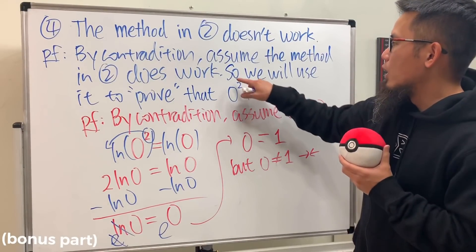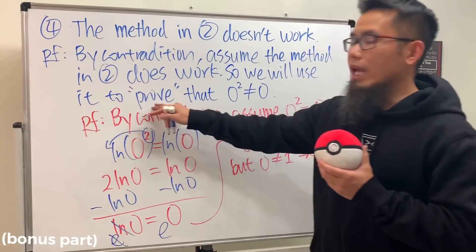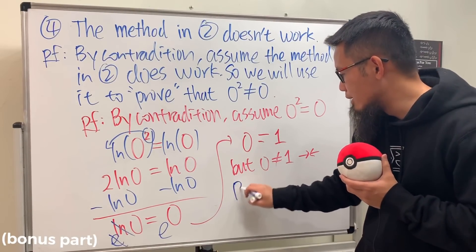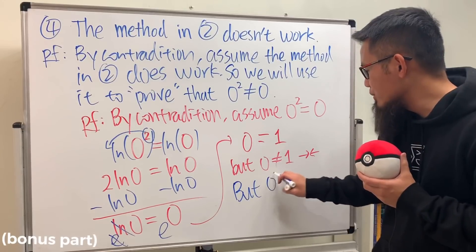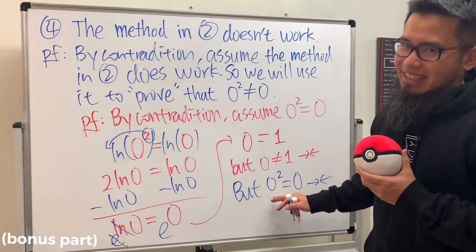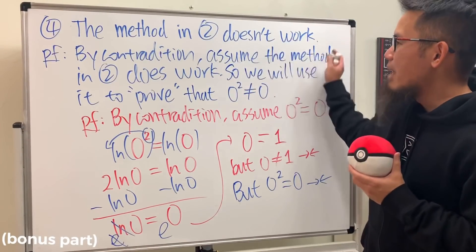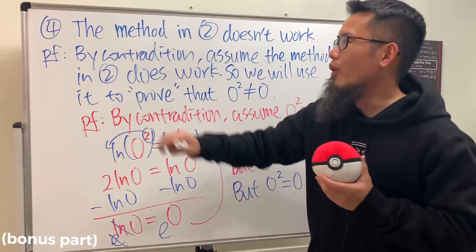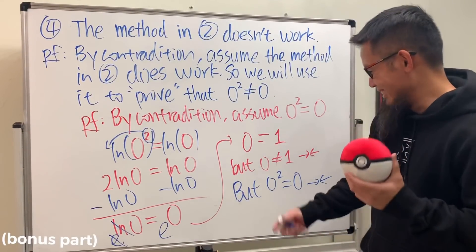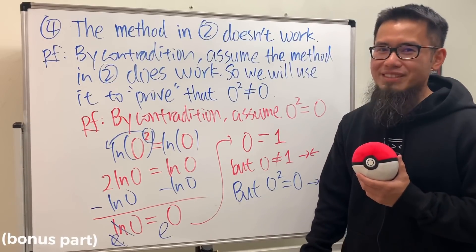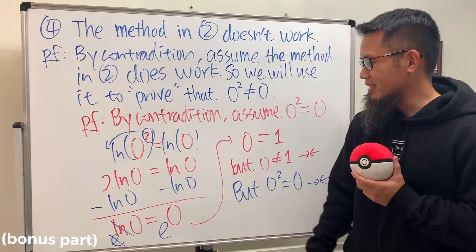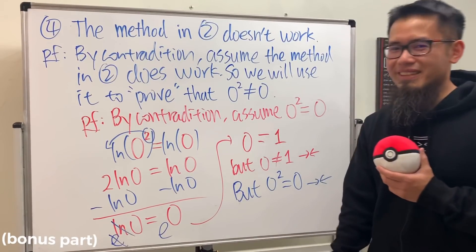We know 0 ≠ 1, so we're done. Using method two, we were able to 'prove' that 0² ≠ 0, which is clearly false. Therefore the assumption that method two works is false — method two doesn't work. I hope this made everything clear. Let me know what you think — see you next time!